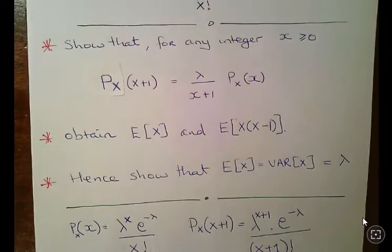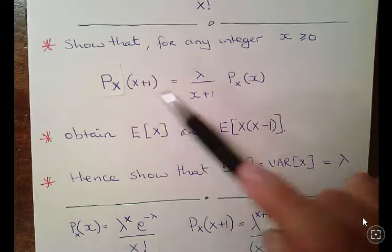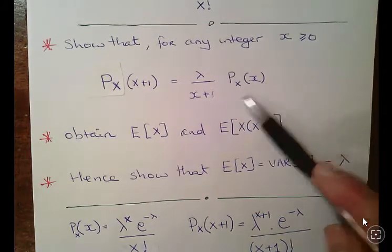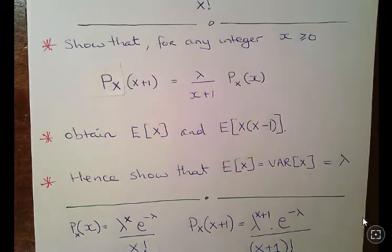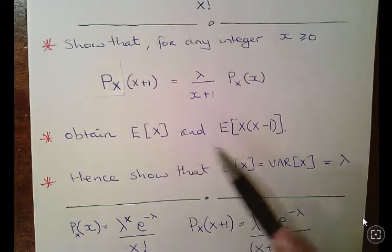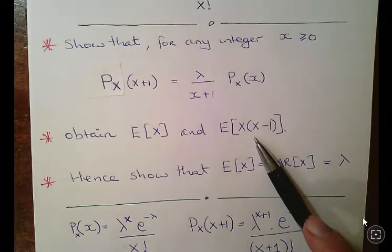What we have to do here is show that for any integer x greater than or equal to zero, the probability mass function of x plus 1 is equal to lambda over x plus 1 times the probability mass function of x. We also have to obtain the expected value of x and the expectation of x times x minus 1. You'll see this one in particular a lot in derivations of means for binomial and Poisson.